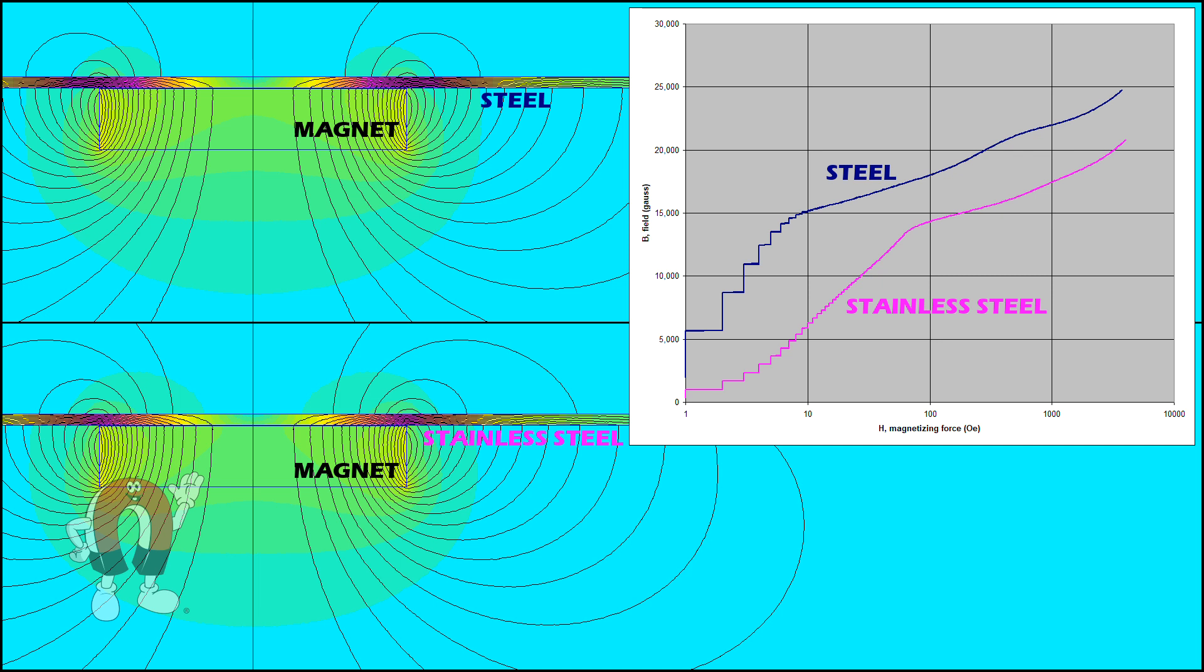On the right are magnetization curves for the two materials. The horizontal axis along the bottom represents the strength of some external magnetic field we apply to a piece of steel. The vertical axis shows what we might see in the material when exposed to that field.